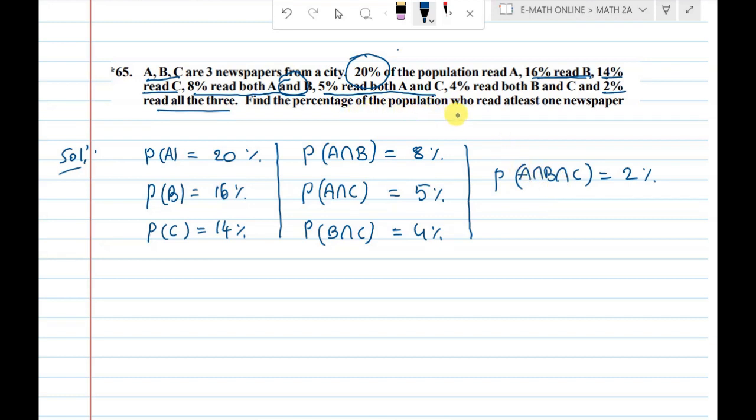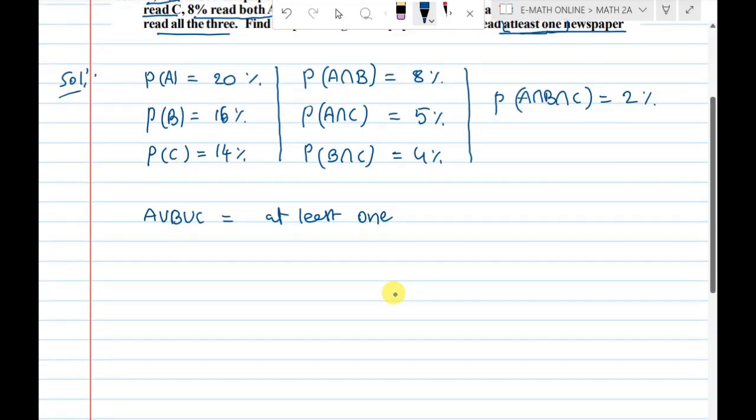Okay, at least one. A union B union C, we can indicate probability. If you compare probability to the event, P of A union B union C is equal to addition theorem on probability.